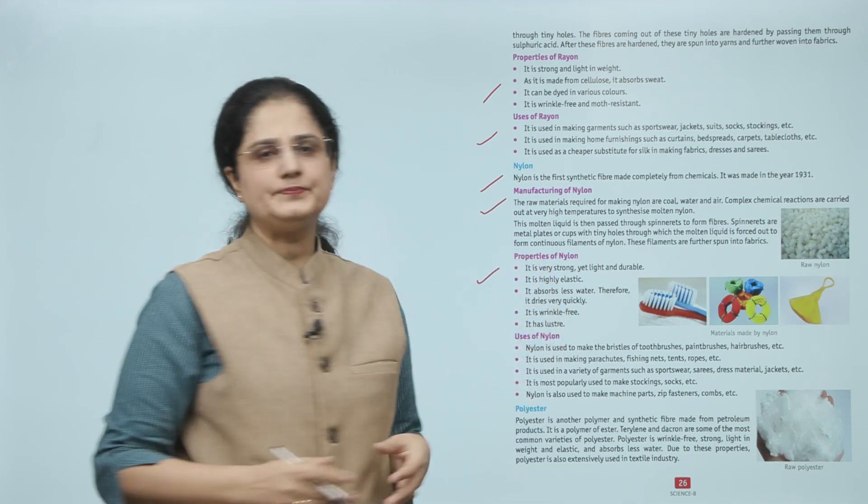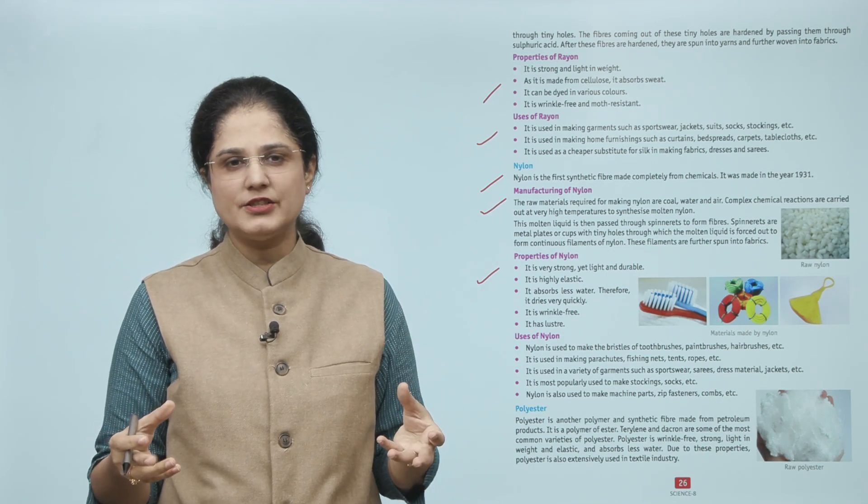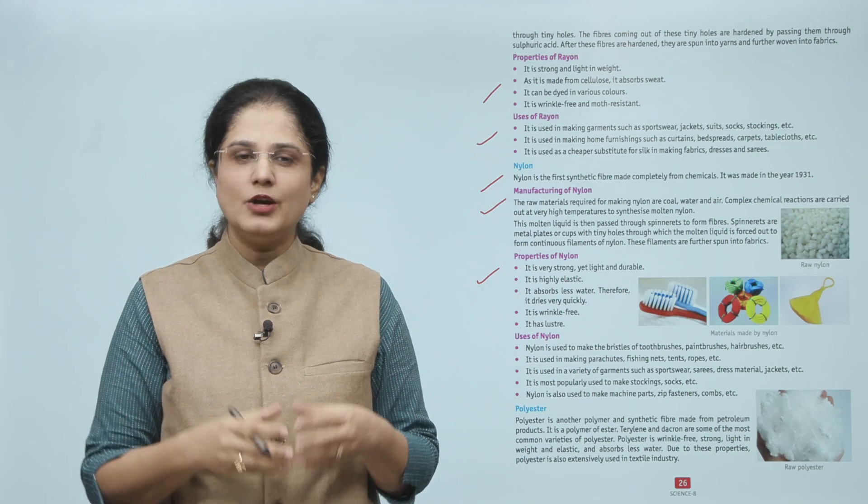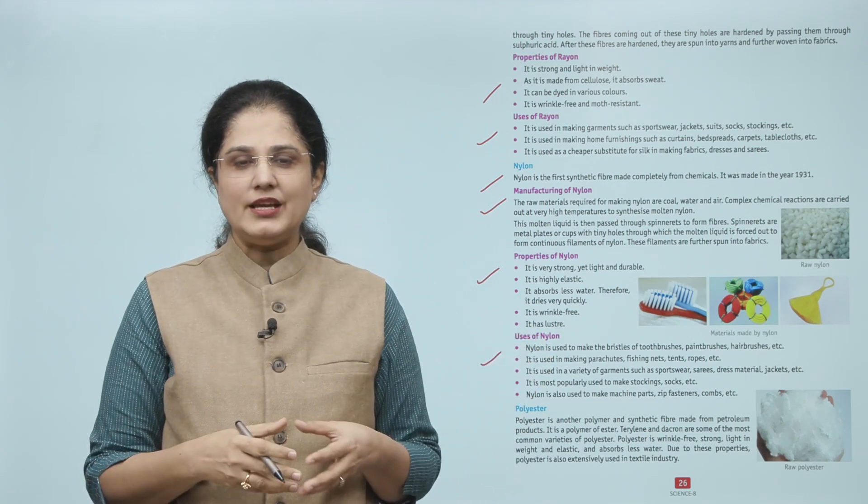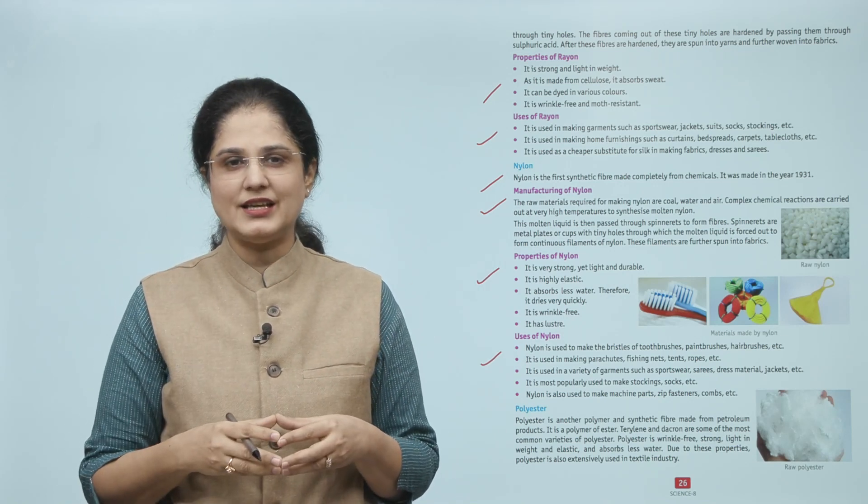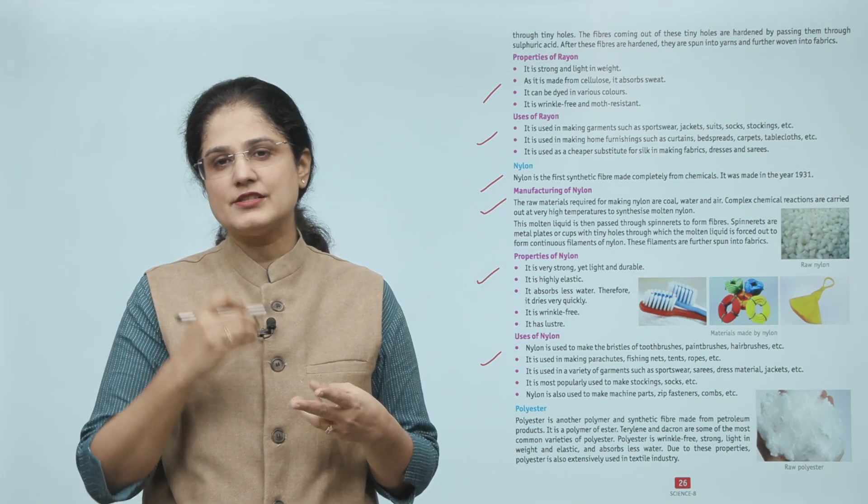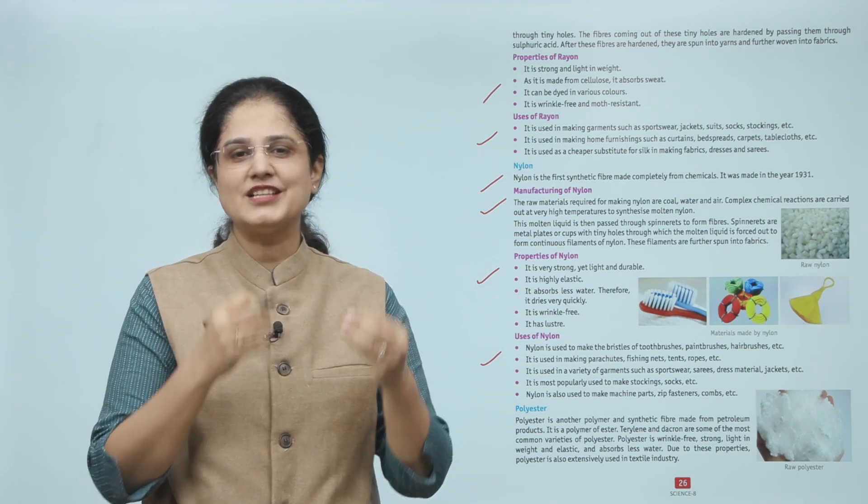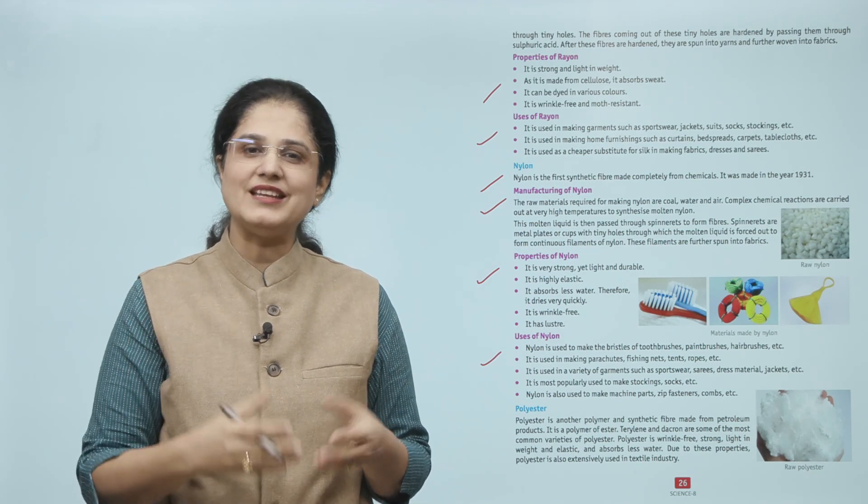Now let us look at the properties of nylon. It is very strong but light in weight and very durable. It is highly elastic. It absorbs less water, so it dries very quickly. It is wrinkle free and has a luster or shine. Nylon is used to make toothbrushes, paint brushes, and hairbrushes. It is used in parachutes, fishing nets, tents, ropes. It is used in sportswear, saris, dress materials, jackets, and very popularly in socks and stockings. It is also used in machine parts and zip fasteners.